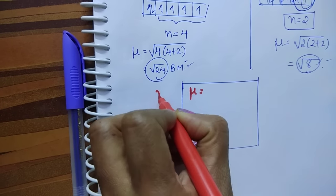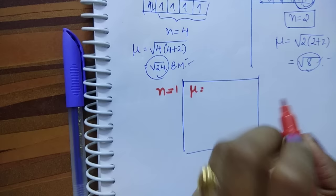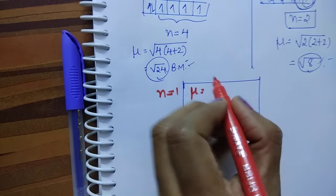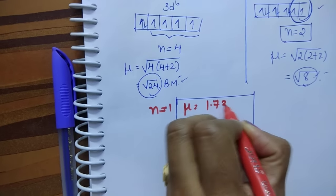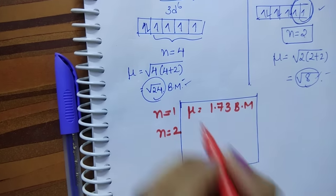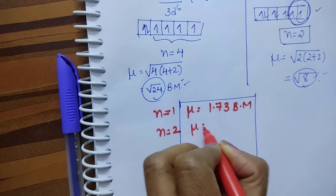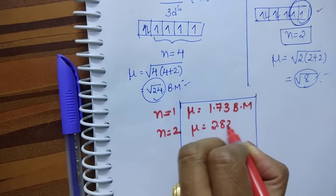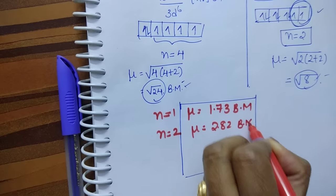If number of unpaired electrons is 1, then its magnetic moment will be 1.73 Bohr magnetons. If number of unpaired electrons is 2, then you get μ value 2.82 Bohr magnetons.